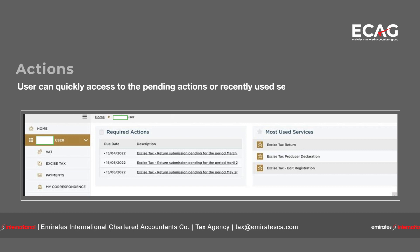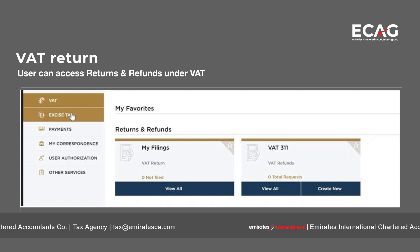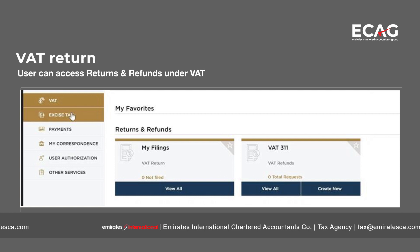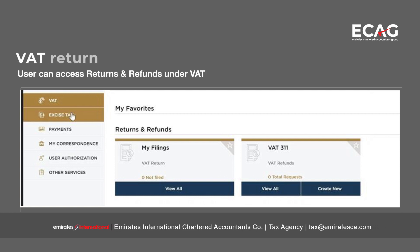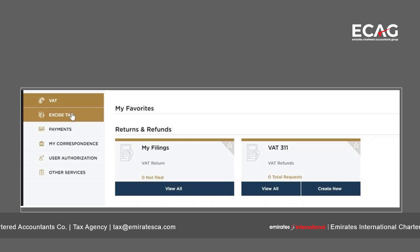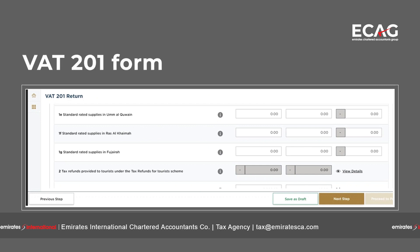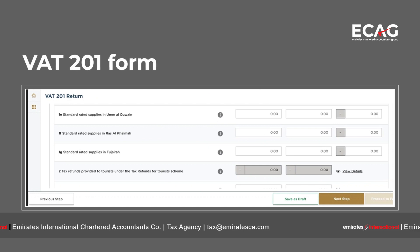If you go to the VAT tab, you will be able to access VAT returns and refunds. There you can view 'My Filings' for VAT returns and VAT 311 for VAT refunds. These tabs can be used for viewing your previously submitted returns or refunds, or to create a new refund or return. The VAT return Form 201 is similar to the one in the previous e-services portal.